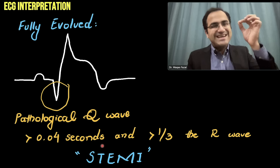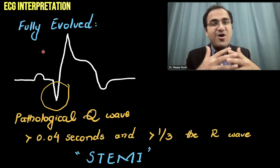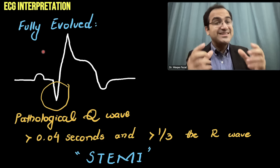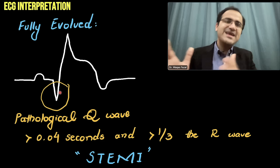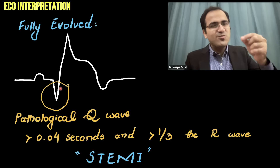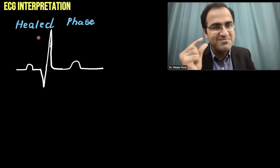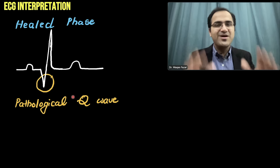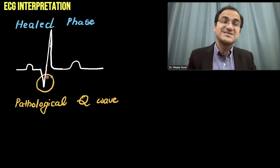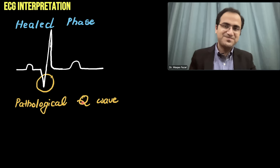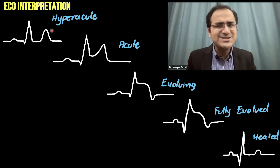After the fully evolved phase where the heart tissue is dead and myocardial infarction has occurred, you cannot restore dead tissue. This dead tissue remains lifelong. In the healed phase, after years, all ECG changes will have reversed to normal — except one thing: the pathological Q wave will always remain. It is the scar that an MI leaves on the ECG permanently.